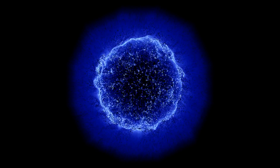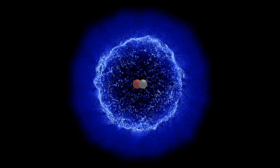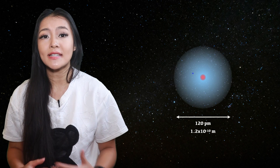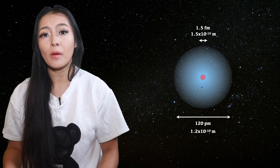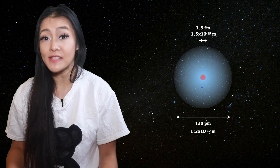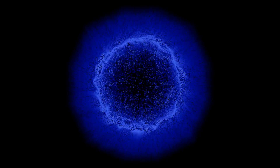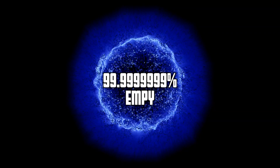Now, atoms, as you may all be familiar with, are made up of a proton and neutron core with orbiting electrons. The smallest atom, hydrogen, consists of a proton and an electron. It's just 120 picometers in diameter, or 1.2 times 10 to the minus 10 meters. A proton is 1.5 femtometers in size, or 1.5 times 10 to the minus 15 meters. And an electron is a thousand times smaller. This means that these subatomic particles are a hundred thousand times smaller, making atoms 99.9999999% empty space.